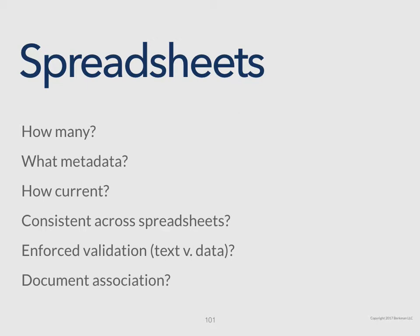Metadata means the labels on the columns of the spreadsheet — typically the title of the agreement, the party, the effective date, the end date, and so on. Spreadsheets can be challenging for capturing that data because of their limitations. You want to know what metadata is being tracked, and notice whether the column labels are the same across multiple spreadsheets or different, and whether those differences matter. How current are the spreadsheets — when were they last updated? If the last contract on there was from three years ago, they probably aren't up to date. Getting information about their maintenance, currency, accuracy, and consistency across spreadsheets is really important, as is whether there is any enforced data validation — meaning, what is the quality of the data? This can make it challenging to sort, report on, or convert that data to another system.